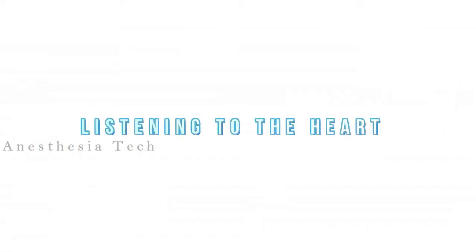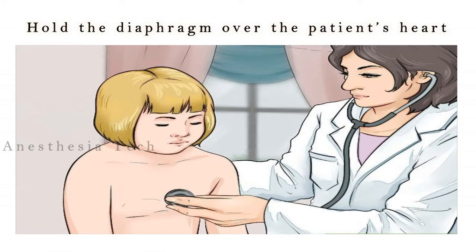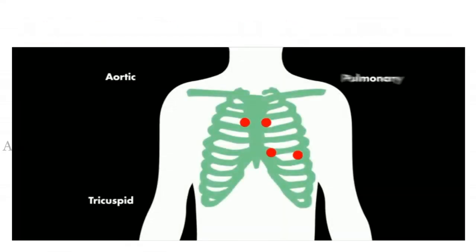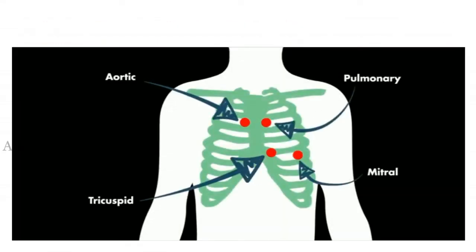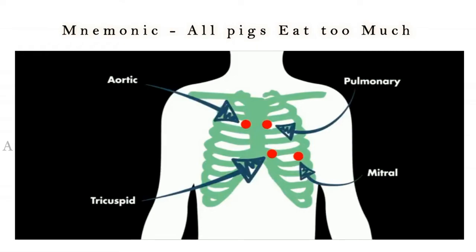Listening to the heart: hold the diaphragm over the patient's heart. You should check the heart sound at four places, namely aortic, pulmonary, tricuspid, and mitral. You can easily remember this by the mnemonic: all pigs eat too much.